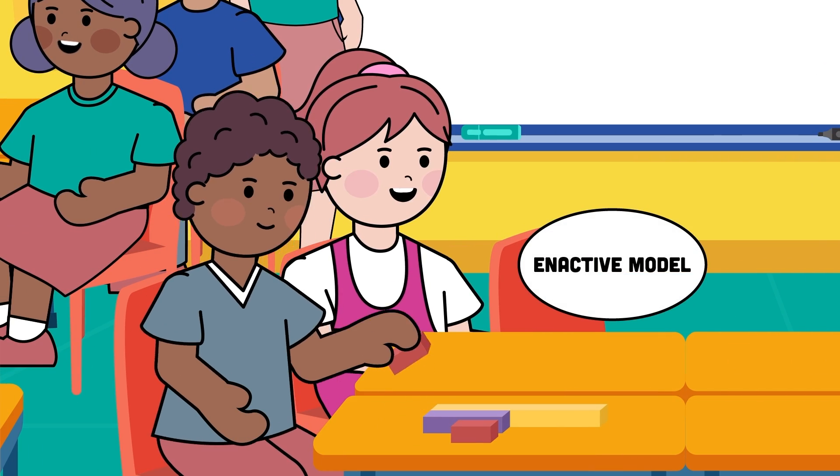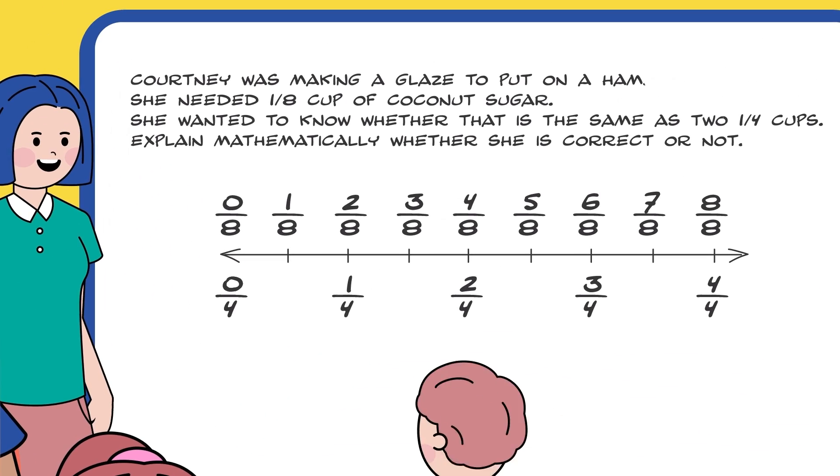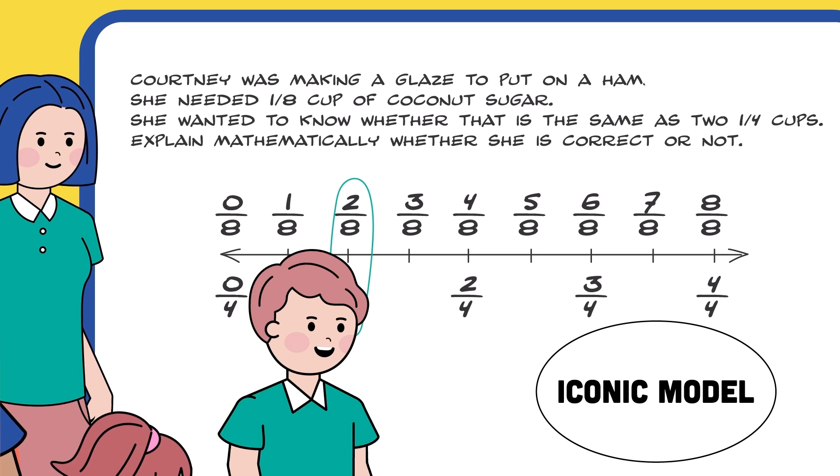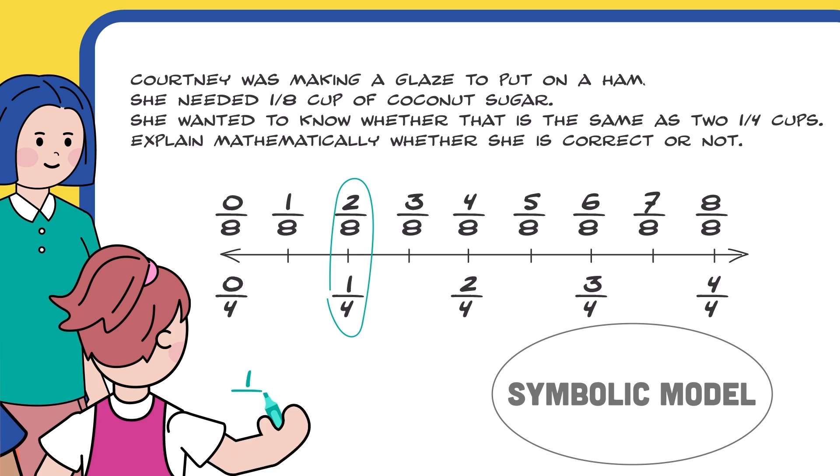Initially, students need to physically enact out the model before moving to an iconic model to get a visual understanding. Then, as their understanding progresses, they can model it symbolically.